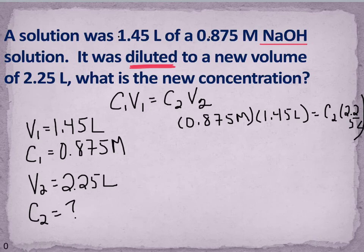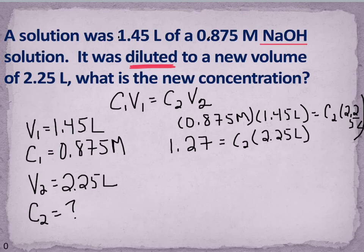Now I can solve for C2. So the first thing I'm going to do is figure out what the left side is equal to. So we have 0.875 times 1.45. And what I end up with is on the left I have 1.27 equals my C2 times 2.25 liters. I'll rewrite that so it's a little bit easier to see. Now I can divide both sides by 2.25 so that I can get the C2 by itself and I get that C2 equals 0.564 molar.